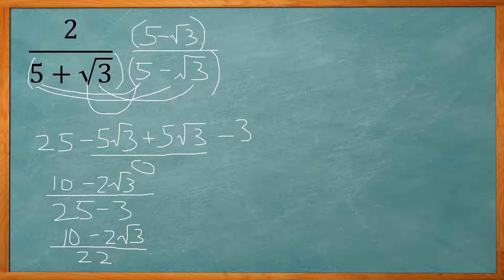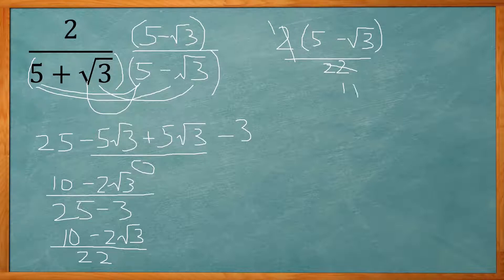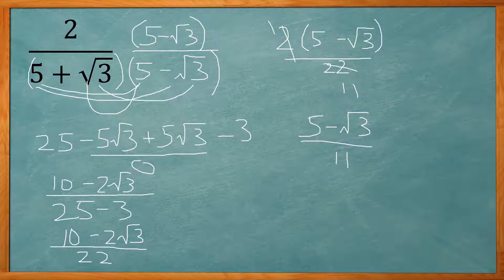Now with any fraction, you always need to put it in lowest terms. We have 10 minus 2 square root of 3 on top and 25 minus 3, which is 22, on the bottom. I can factor out a 2 from the top, giving 2 times the quantity 5 minus square root of 3 divided by 22. The 2 on top and 22 on the bottom both divide by 2, and that reduces down to 5 minus the square root of 3 over 11. That is rationalizing the denominator using the conjugate.